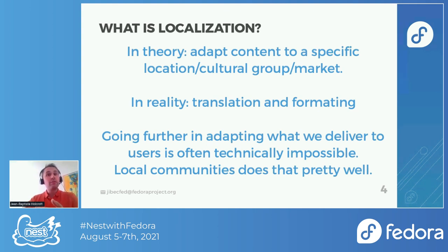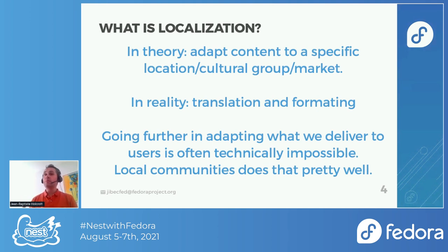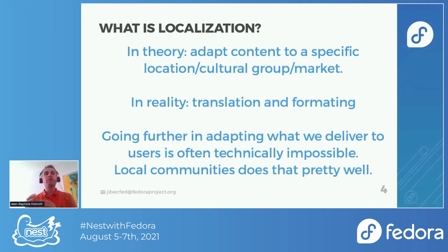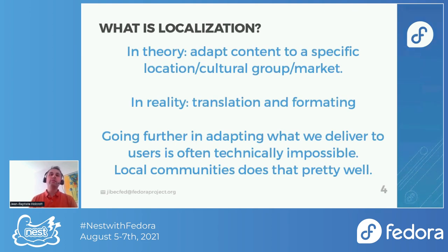Most of the time you will try to speak their language, and they need to understand the references you make. If you make a reference to the family, the structure of the family is not the same in all countries. In some places they will totally get an advertisement; in some countries they just don't understand what you are talking about. In free software, we are most of the time using only translation and a little bit of formatting — we want dates and currencies to be correctly displayed. But we don't go further, because going further requires your software to really be able to adapt to different use cases, and this is not technically feasible with the tools we have in the open source community.